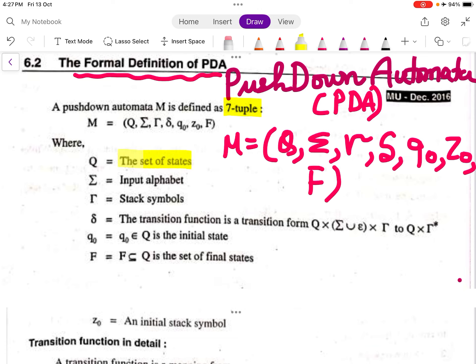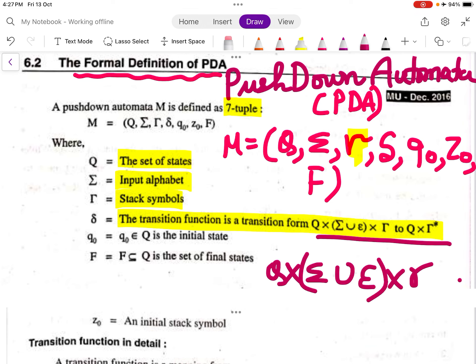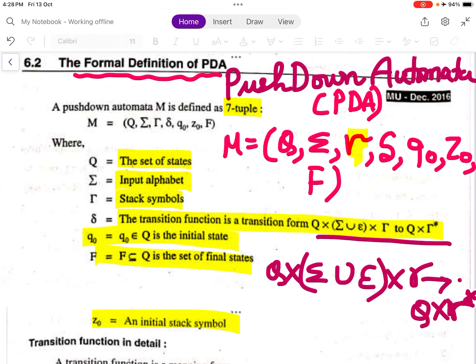Where Q is the set of states, Σ is the input alphabet, Γ represents the stack symbols. δ is the transition function from Q × (Σ ∪ ε) × Γ to Q × Γ*. q0 is the initial state, F is the set of final states, and Z0 is the initial stack symbol.